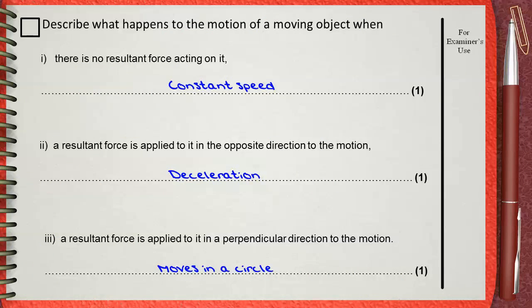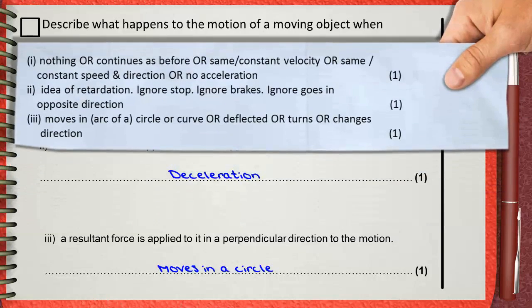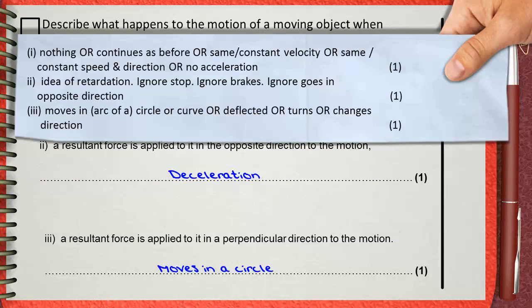The mark scheme awards marks as follows. For Part I — if no resultant force — you can say 'nothing will happen,' 'continues as before,' 'constant velocity,' 'constant speed,' or 'no acceleration or deceleration.' For Part II — if the force is opposing the direction of motion — you can say any idea about retardation or deceleration. Ignore: 'stop,' 'brakes,' or 'goes in opposite direction.'